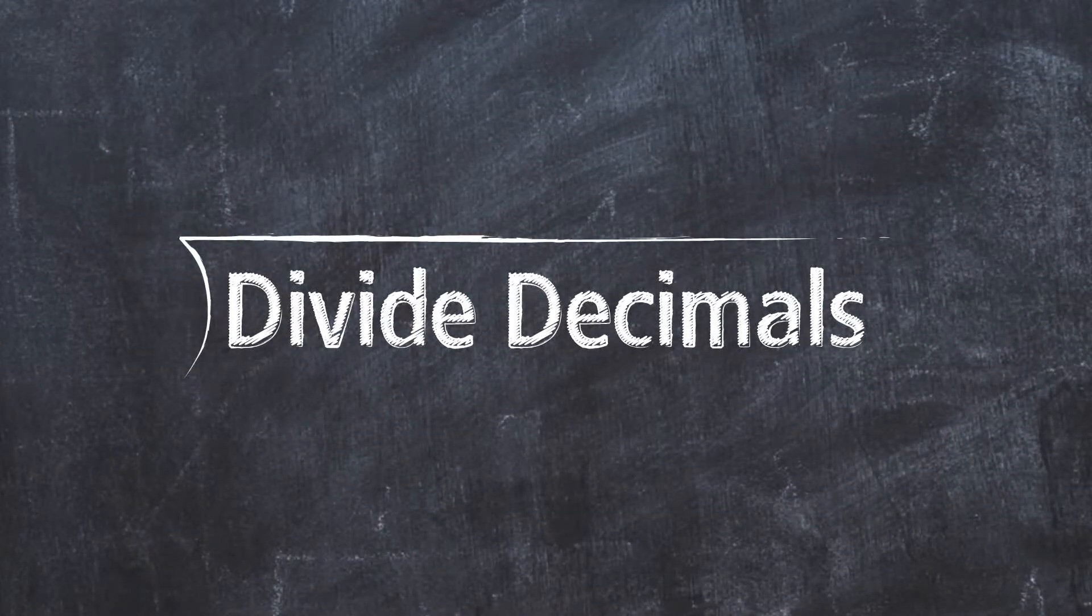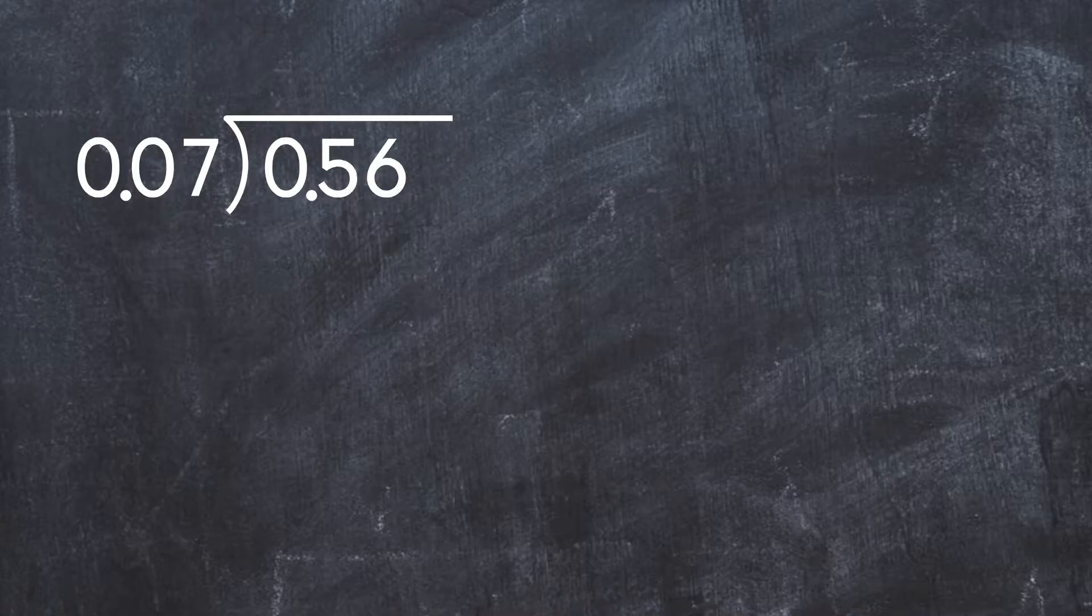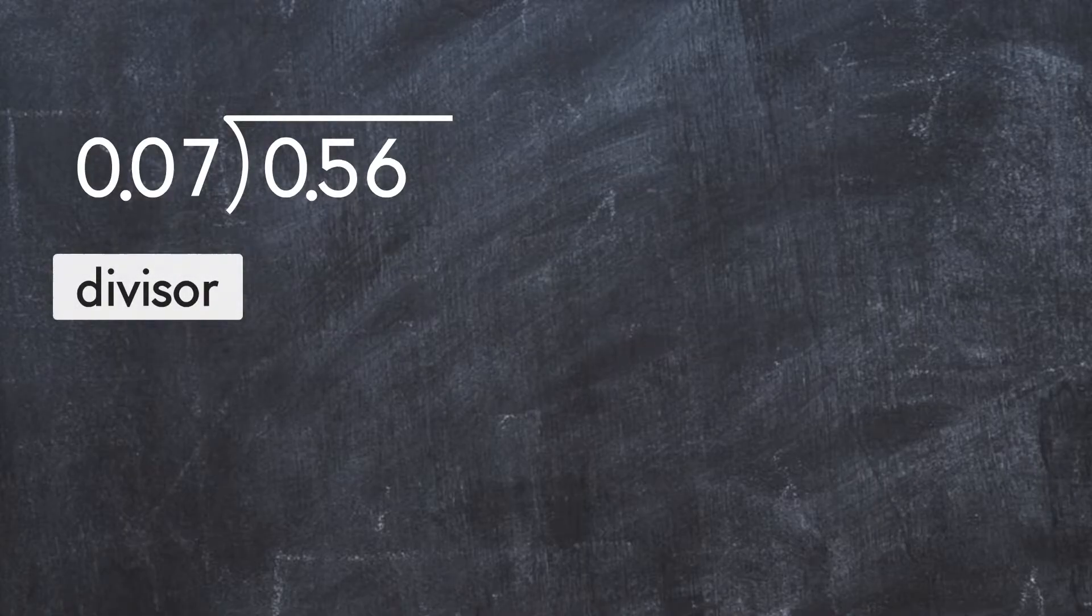Divide decimals. Let's say we want to divide 0.56 by 0.07. But how can we do that? 0.07 is our divisor.